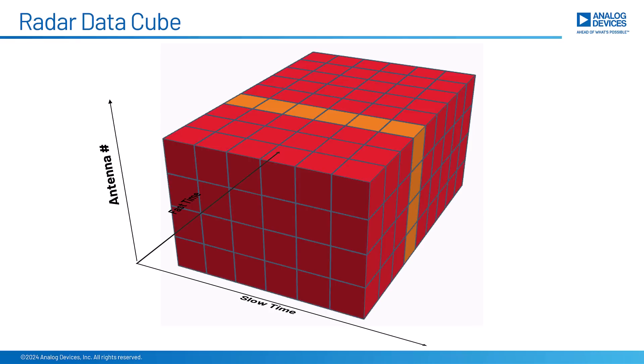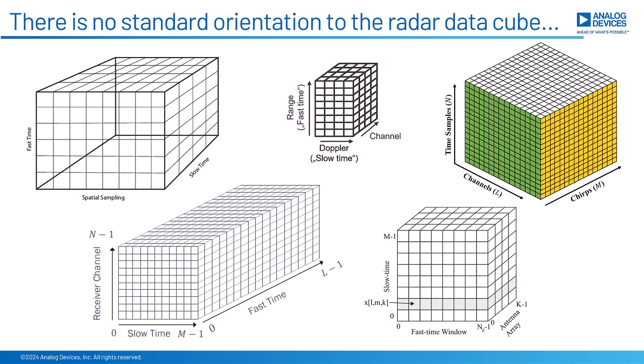And I should point out that the cube rotates based on what you want to emphasize, which means that unfortunately there is not a consistent way to look at representations of the cube. Any of the sides could be chirps or time samples or antenna elements. But you can see that each of these data cubes has all three of those things. The number of chirps, the number of samples per chirp, and the number of receivers.